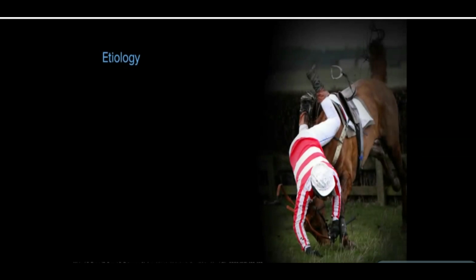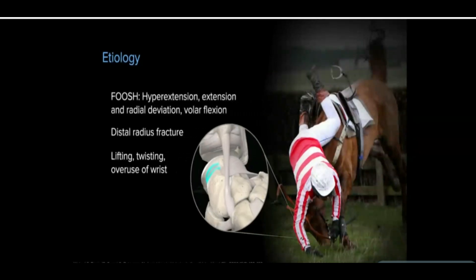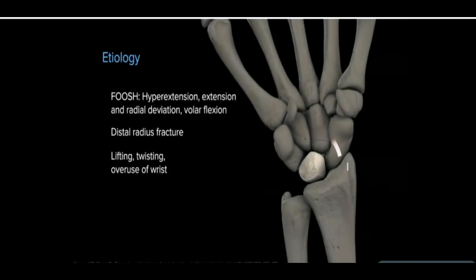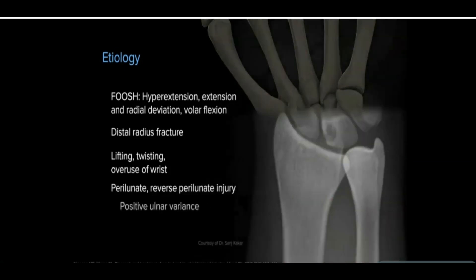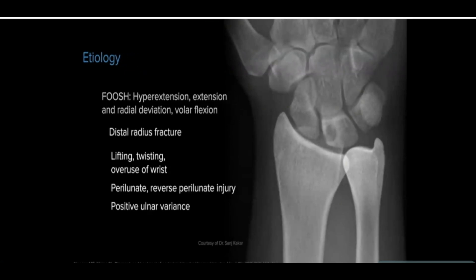The cause of this axial load displacement is evident when falling onto an outstretched hand or from impact of high-energy forceful rotational trauma. The wrist may be in hyperextension, in extension and radial deviation, or in volar flexion. Complex injury like a perilunate dislocation is more common than isolated injury. Degenerative changes like positive ulnar variance leading to ulnar carpal impingement may be associated as well.